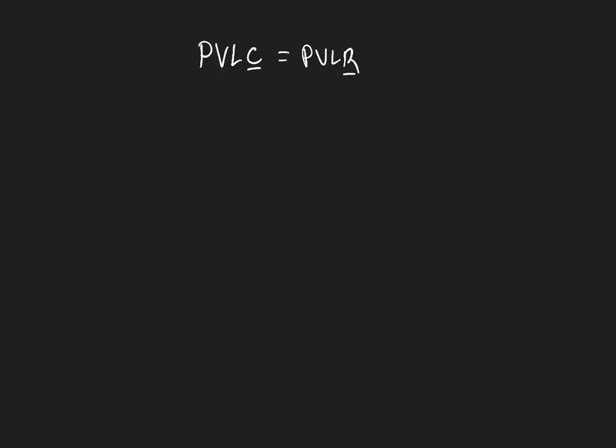We start that way by saying the present value of lifetime consumption is c1 plus c2 over 1 plus r, and our present value of lifetime resources ends up being y1 plus w1 plus y2 plus w2 all over 1 plus r.